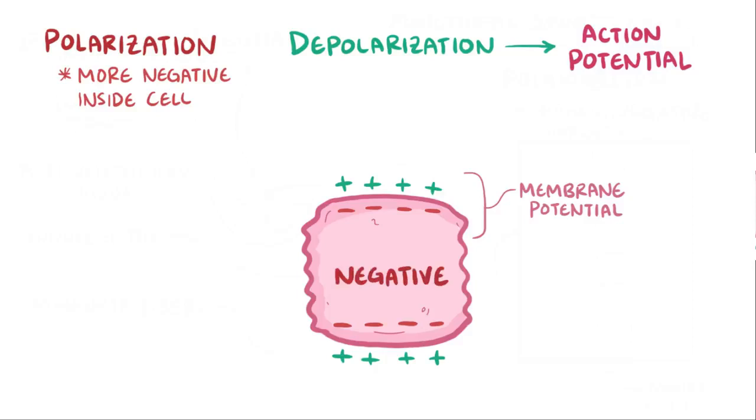So if the membrane potential is negative, the inside of the cell is more negative than the outside. If it's positive, the inside is more positive than the outside. And if it's zero millivolts, then the inside and outside have the same charge. There's zero millivolts of difference.